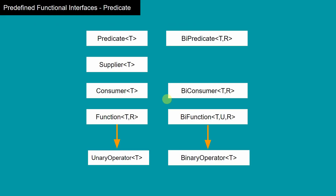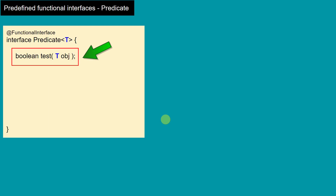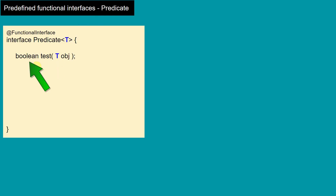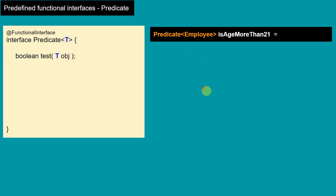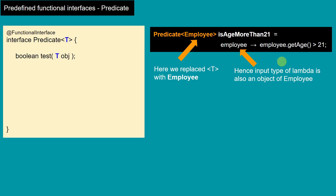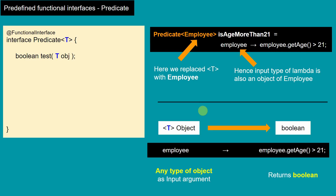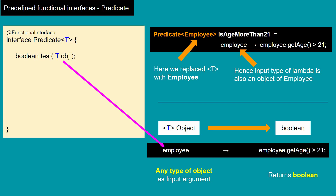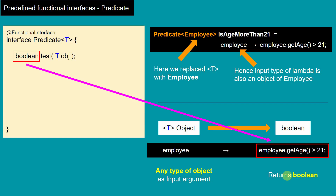We are going to cover predefined functional interfaces, and in this video we are going to see Predicate as our first functional interface, which is the most widely used. This interface has only one method, and this method accepts any type of object — written as T — meaning it can accept any type. It returns boolean. So if we create a Predicate of Employee, the lambda function is going to take an Employee object and return boolean — true or false, for example whether the employee age is greater than 21.